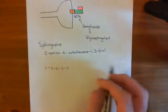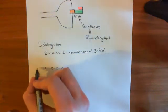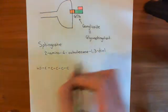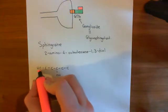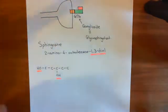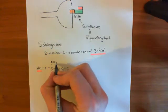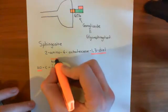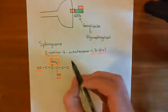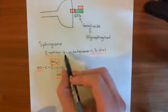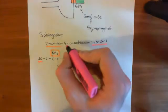So what do we know? Of the first carbon we have a hydroxyl group — that's our 1,3-diol. We also have a hydroxyl group on the third carbon. These two groups come from that 1,3-diol in the name. We also have this 2-amino, so there's an amino group on the second carbon. Finally, we have the octadecine double bond off the fourth carbon — that double bond here is essentially all the interesting features of this molecule.